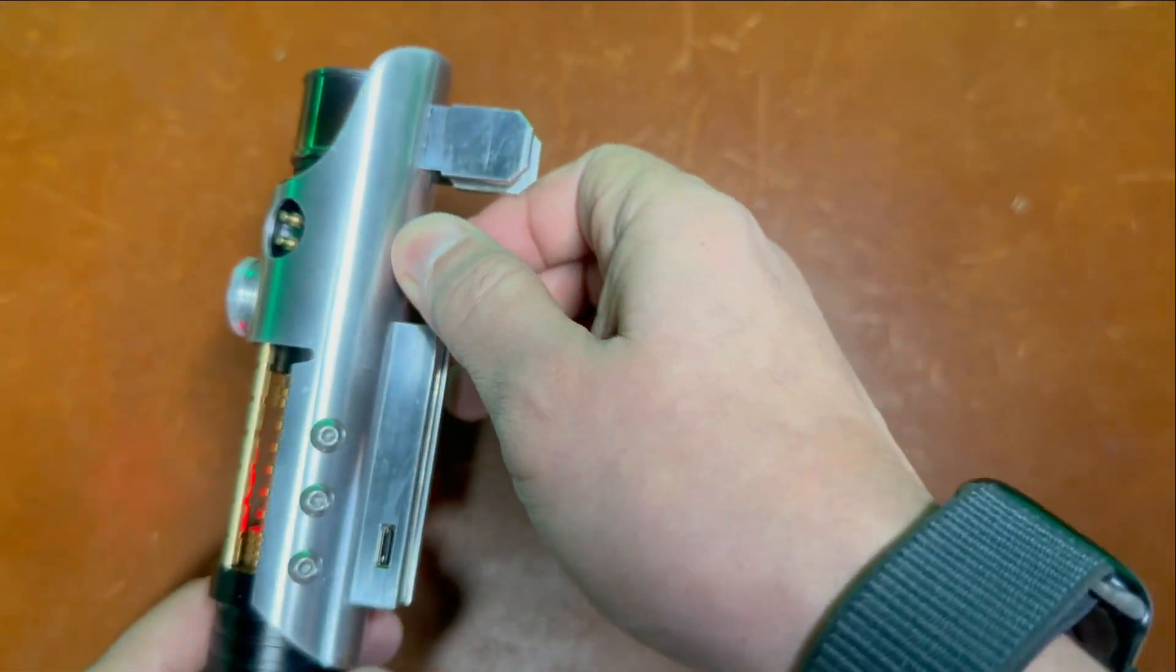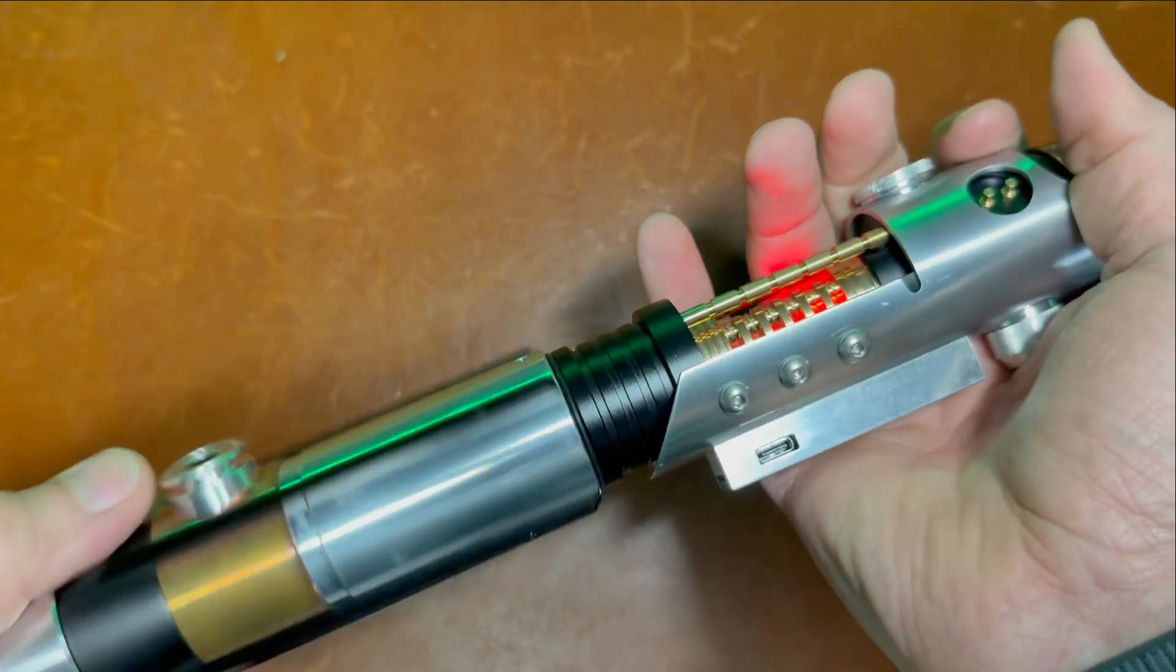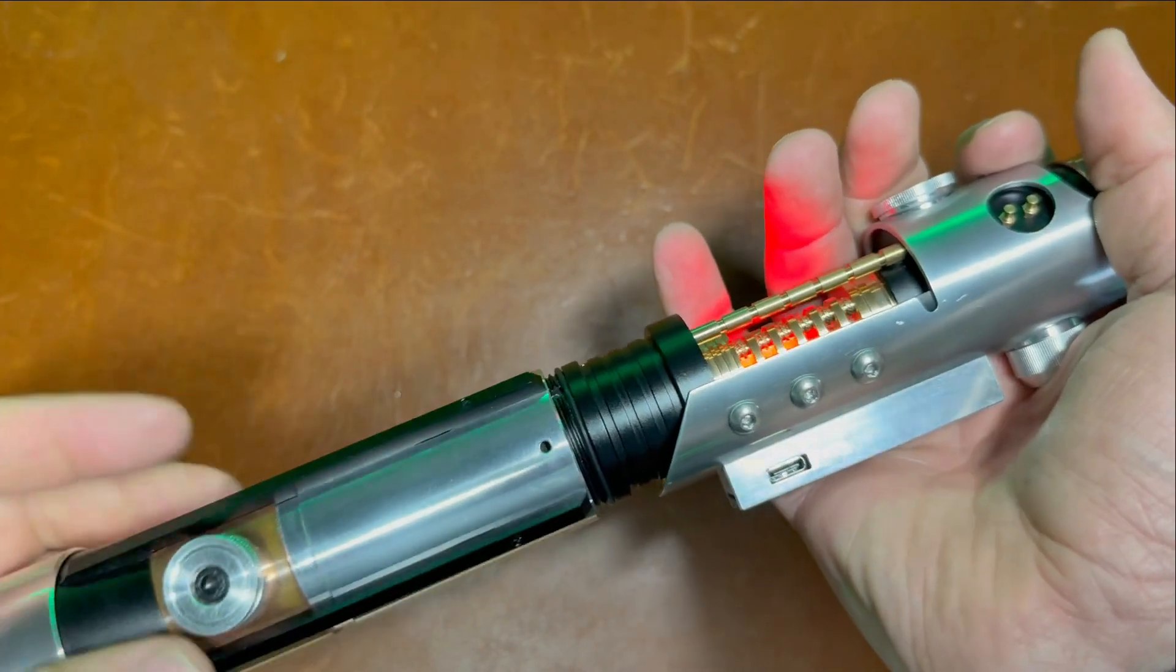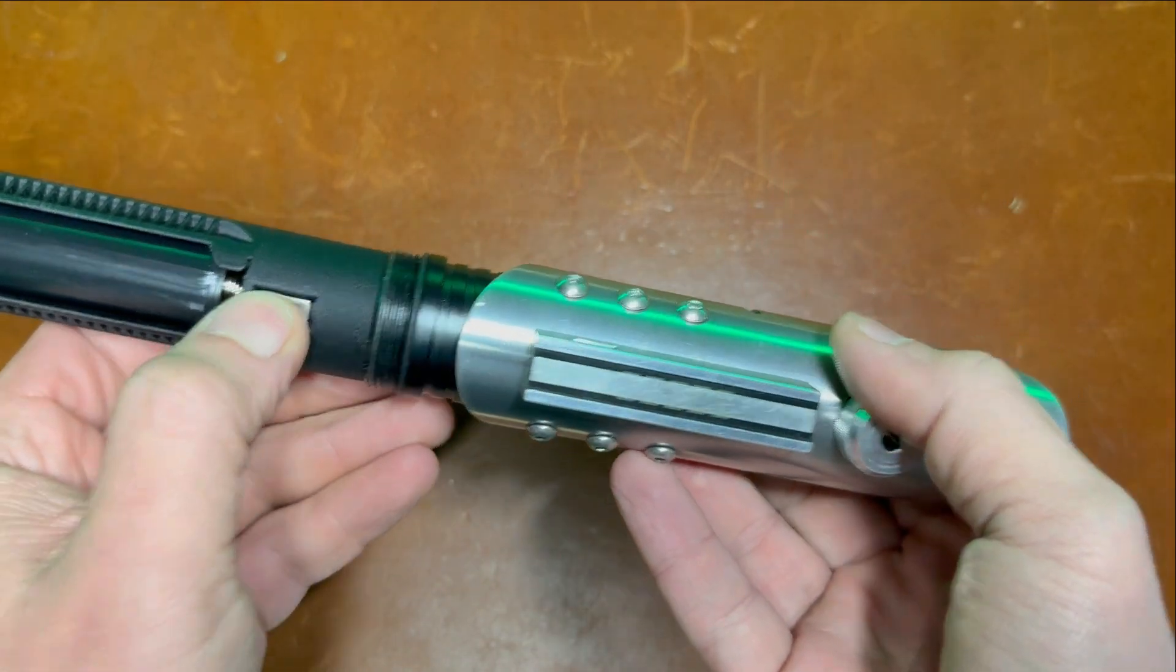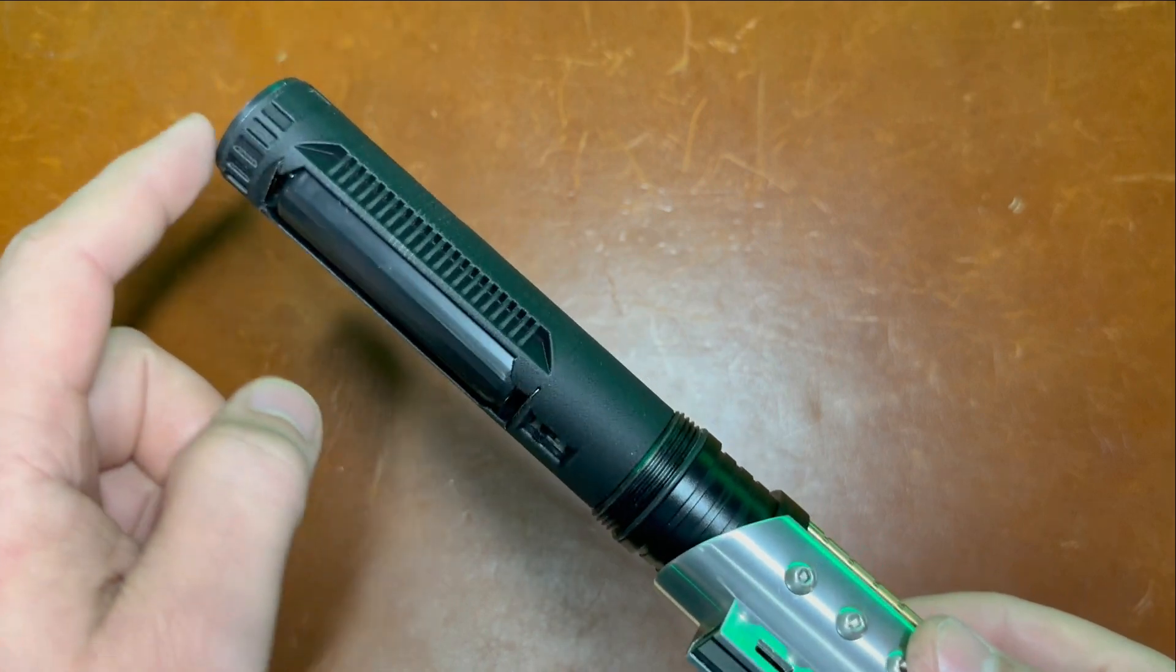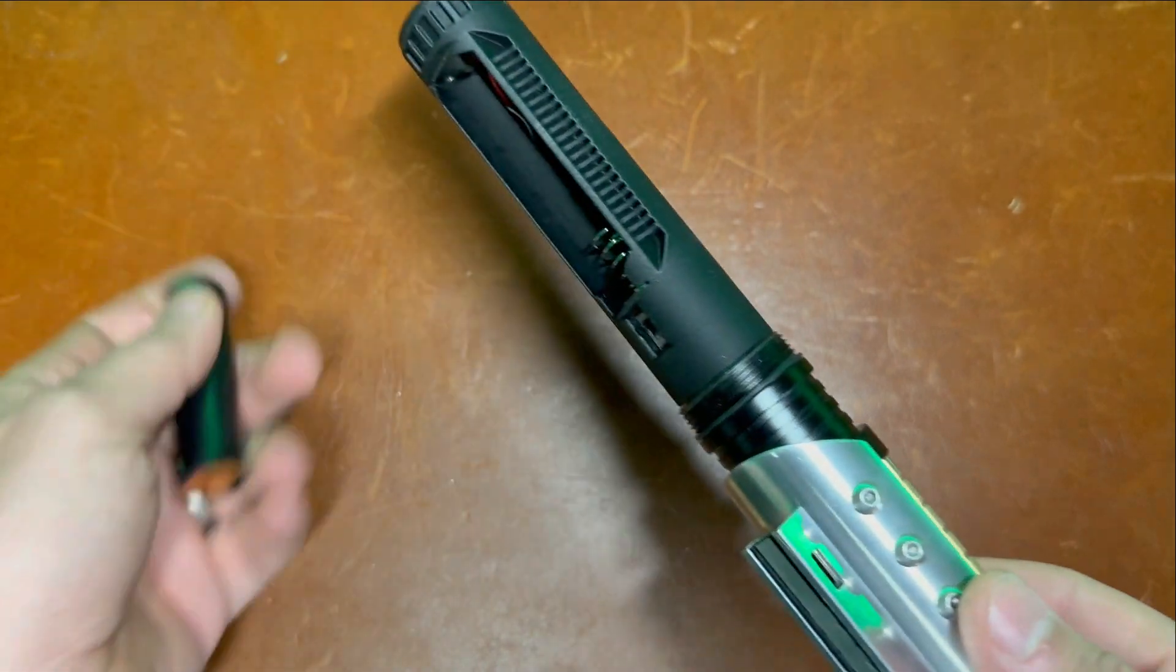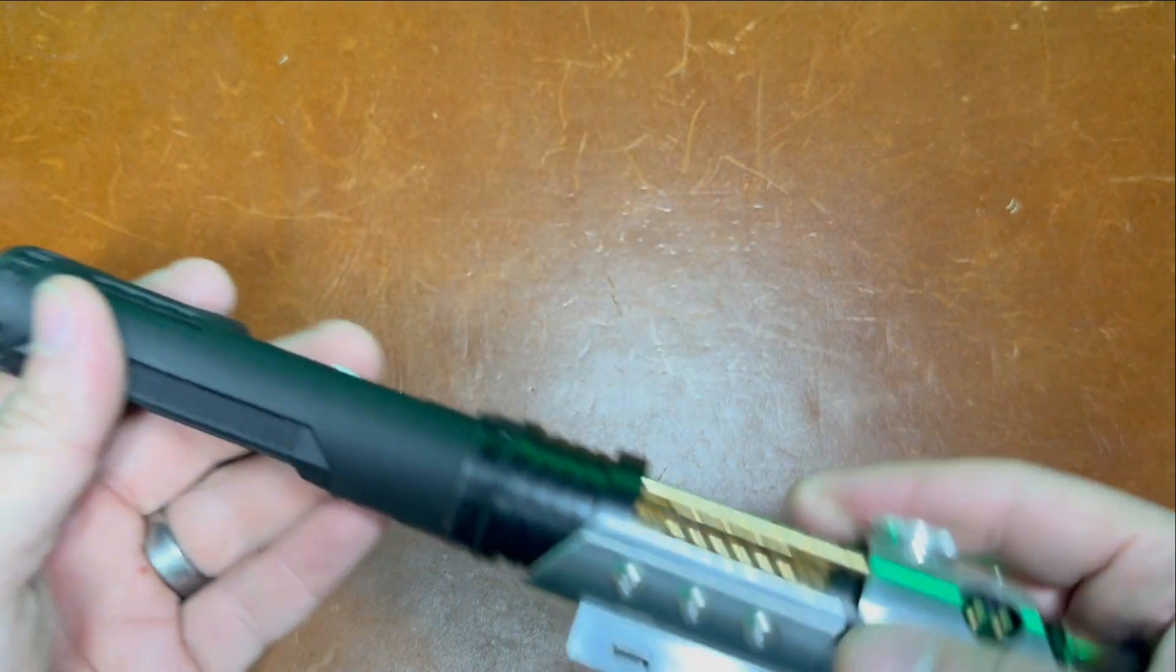We'll go ahead and take the blade out, tighten this back up. We'll take our handle off here, turn the saber on and flip it off with the kill switch right there. And then when you want to charge your battery, you can come over here from the positive side by your speaker, just pop your battery out and put it in any external 18650 charger. That's how you do that.